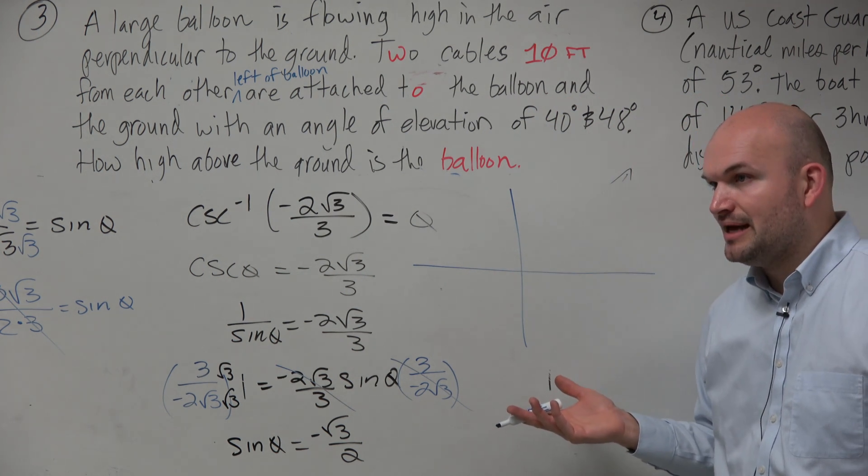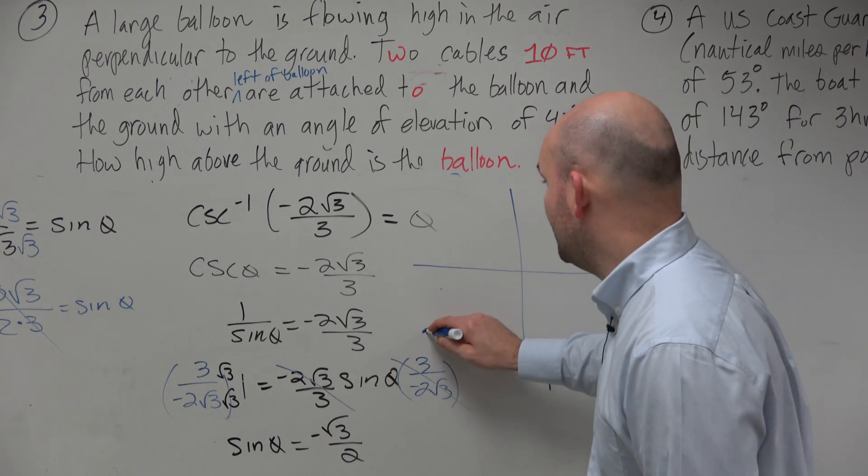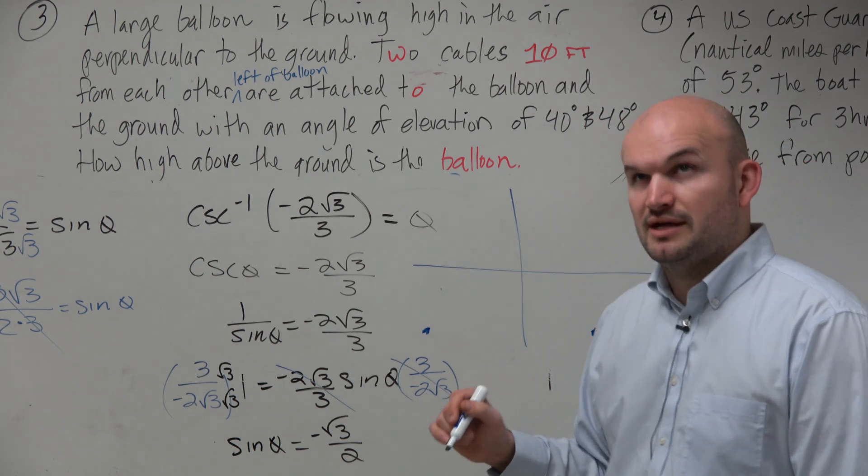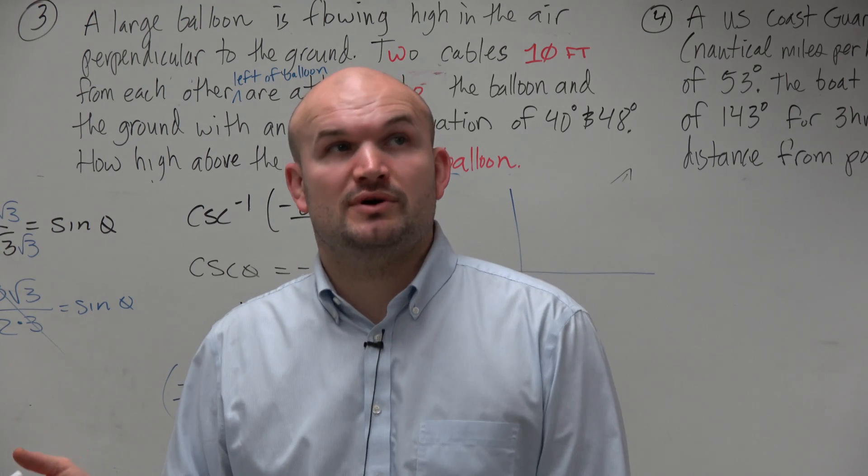when is sine going to be negative? Sine's going to be negative down in the third and the fourth quadrant, right? Yes? So I got to think, all right, when is sine going to be negative square root of 3 over 2?